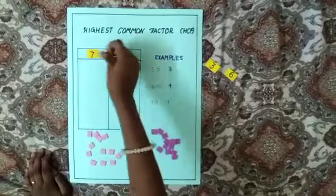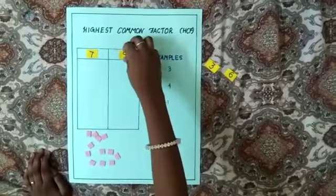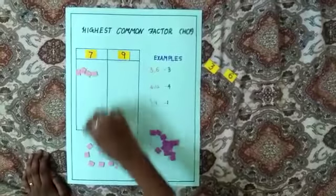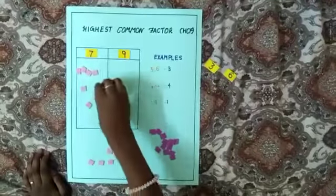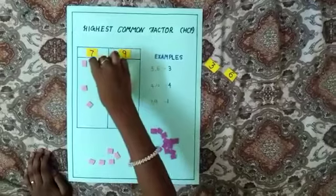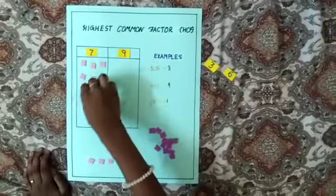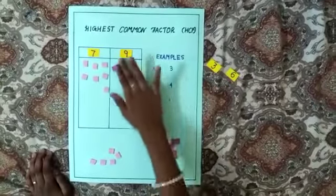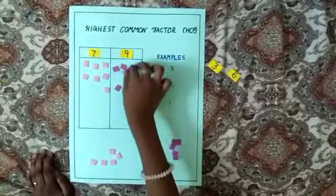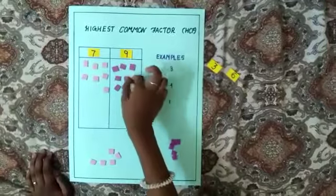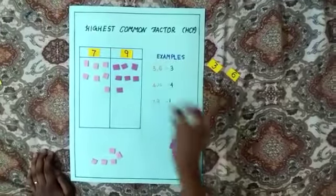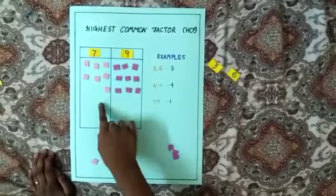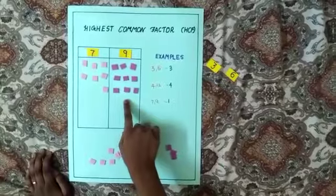Now I am going to find the HCF of 7 and 9. Take 7 coins here and 9 coins here. Now 7 is less than 9. Remove 7 coins here.